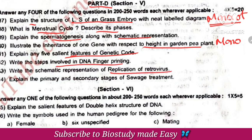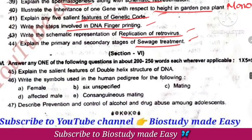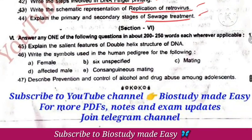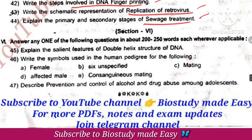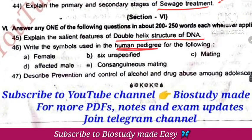The function of retrovirus. Sewage treatment. Salient features of DNA. Symbols used for pedigree analysis — I will tell you all these questions. The same questions are repeated and I will mention the important ones.